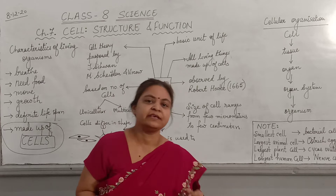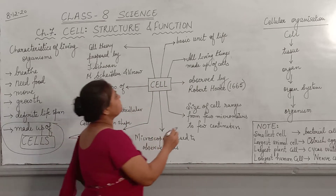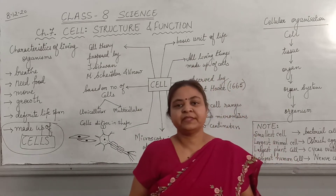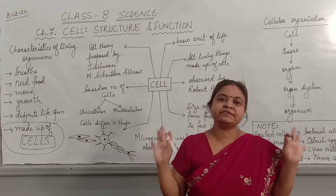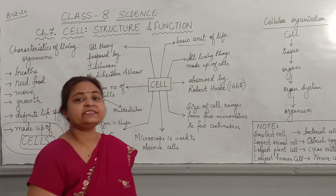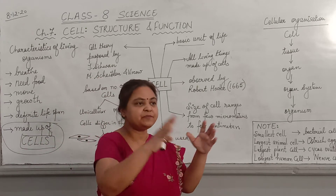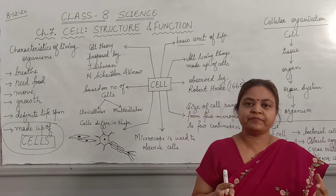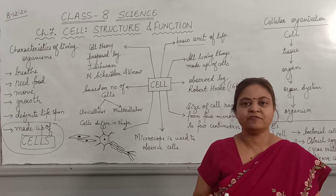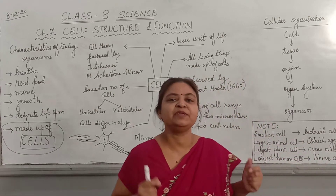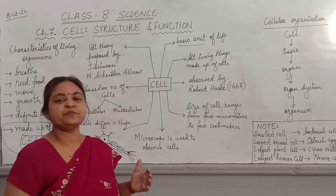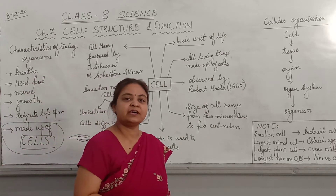Cell is the basic structural and functional unit of life. All living organisms are made up of cells. We can say that, like a wall is made up of bricks — many bricks come together to make a wall, so a brick is the basic unit of the wall — similarly, living beings are made up of cells. So cell is the basic structural and functional unit of living organisms.